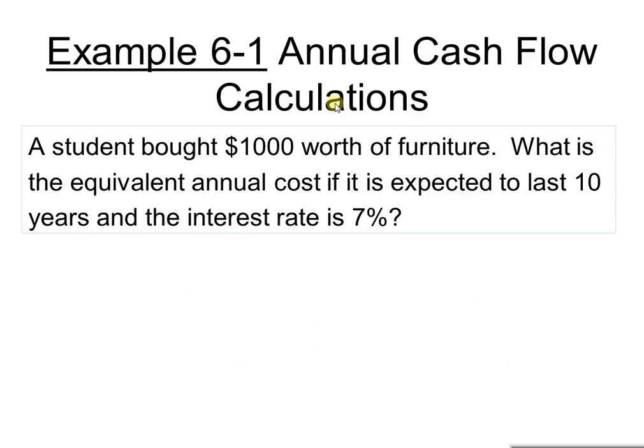Let's go ahead and take a look at annual cash flow calculations. Here is example 6.1 from the book. A student bought $1,000 worth of furniture. What is the equivalent annual cost if it is expected to last 10 years and the interest rate is 7%? We're looking at the initial cost of $1,000. Here is the cash flow diagram — an arrow pointing down at time zero.